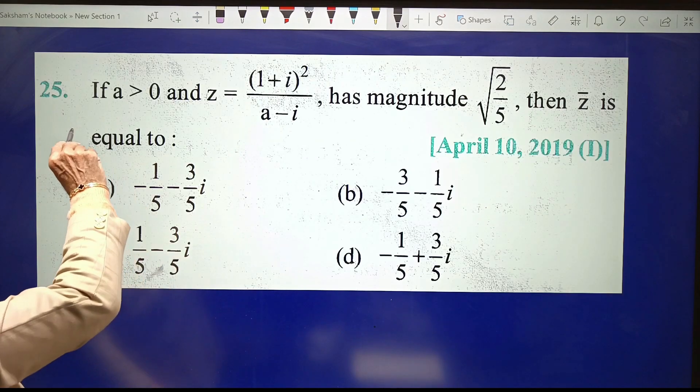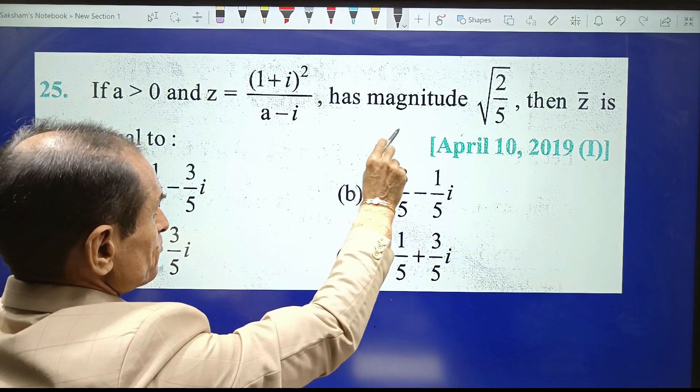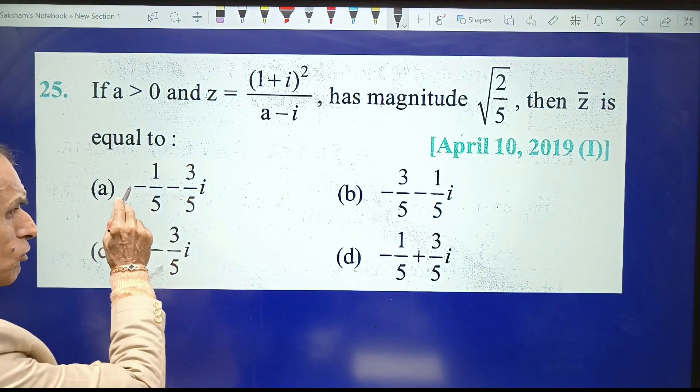In this question, it is given that if a > 0 and Z = (1+i)²/(a-i) has magnitude √(2/5), then Z̄ is equal to...